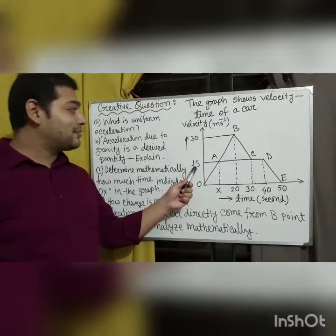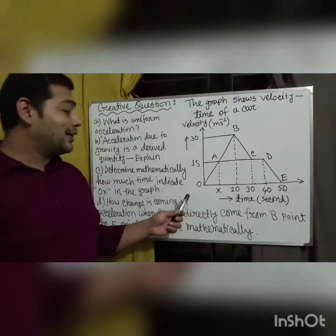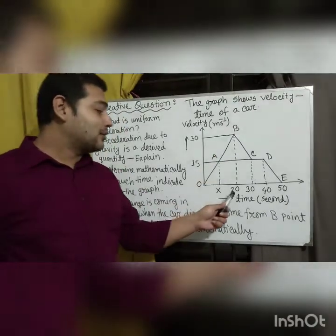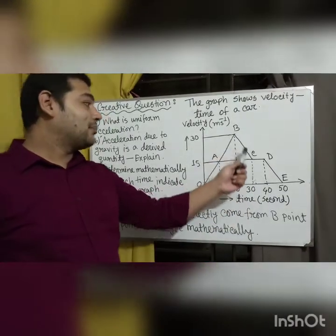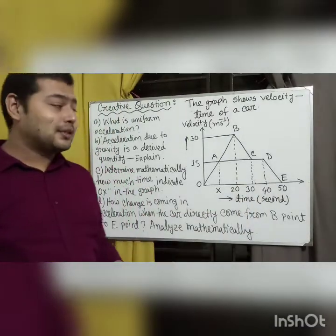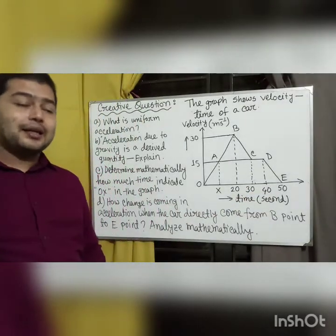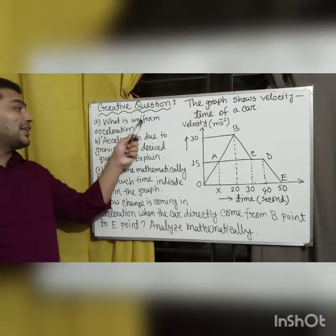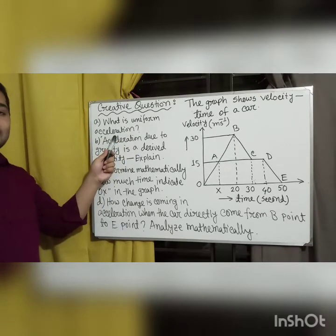In the CD part the curve is in uniform velocity, and in DE the curve is in deceleration. We have been given two velocity values: one is 15 meters per second and another is 30 meters per second. For position A the curve travels X time; for position B the curve travels 20 seconds. At 30 seconds the position of the curve is C, at 40 seconds the position is D, and at 50 seconds the position is E.